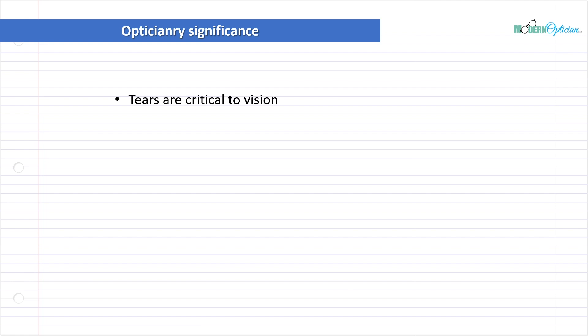Without tears, you would not have vision. People with dry eye syndrome, with any conditions that cause their eyes to be very dry, have very poor vision because they no longer have a nice smooth refractive surface. Remember the relationship between production and drainage - it's important to know where the tears come from and where they drain out, because you're going to hear this a lot throughout your career in eye care.